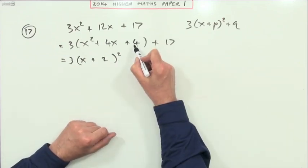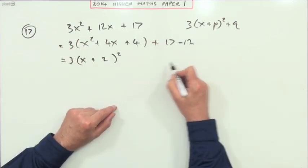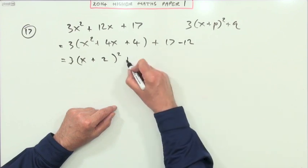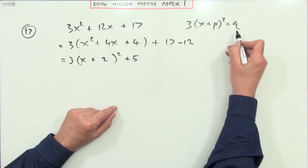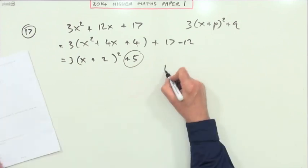But that 4 has been added; in fact I've added 3 of those 4s, so 12 has been added. I'll need to remove 12 from it to keep it balanced—that makes it plus 5. If it's q they're asking for, 5's your answer, which makes it B.